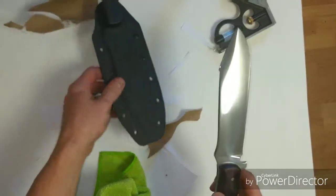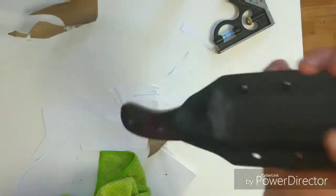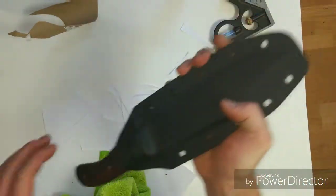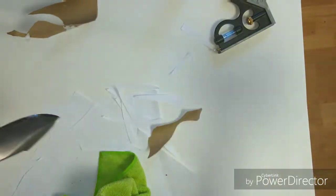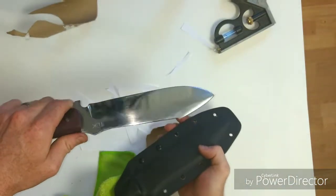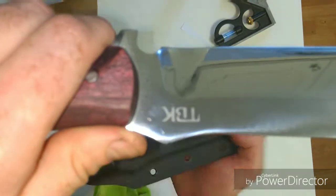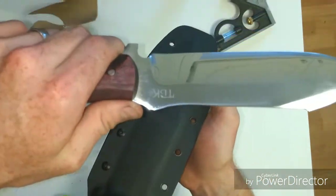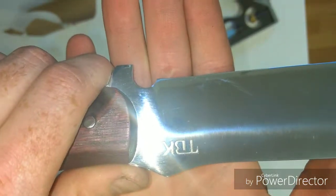Kydex sheath, black. Locks in nicely, really good snap, really good retention, and then it pops out. We got your little thumb rest here, pops out. There we go. TBK knives. Come on, that was going to be my fade out right there, this lovely, there we go, right on my logo.